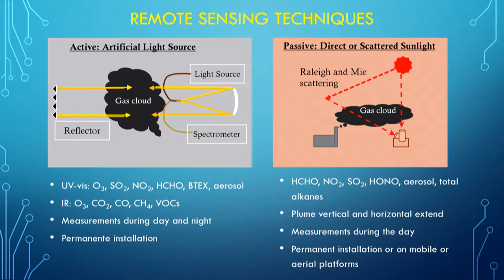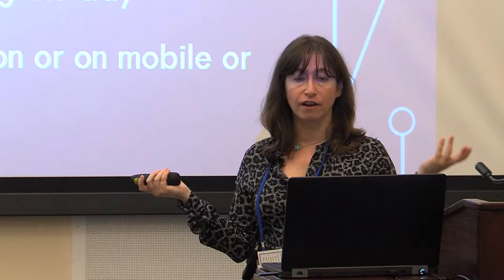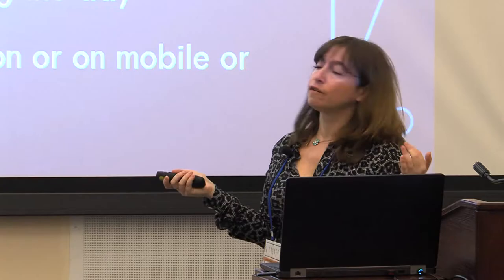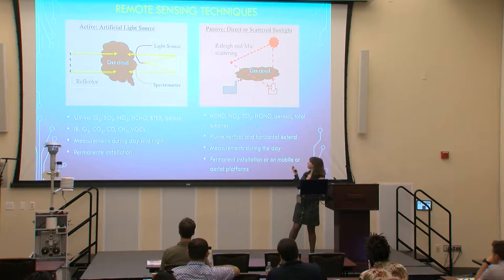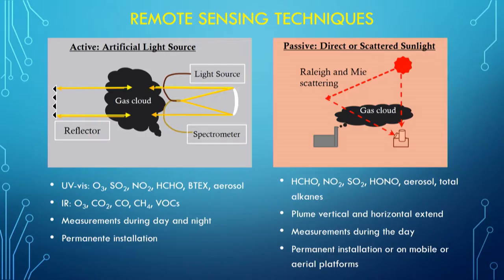Another way of doing remote sensing is the passive method, which uses light that already exists — direct or scattered sunlight, and sometimes even moonlight. With this you can also measure a range of compounds, though you're a little more restricted in the pollutants you can detect since you don't have control over your light source. However, because sunlight provides a very long light path, you can detect lower concentrations of pollutants. Depending on your viewing geometry, you can also do vertical profiling of pollutants or detect concentration throughout the boundary layer.